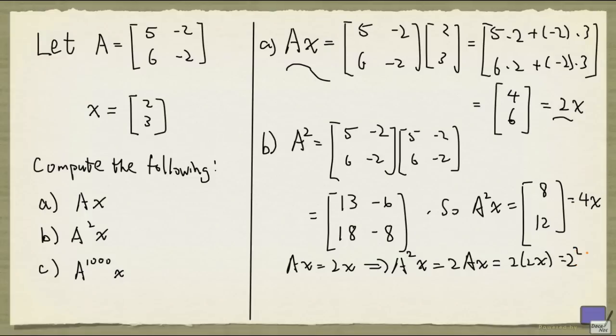And that's 2 squared x. Now we can repeat this and get that if k is a positive integer, then this is simply 2 to the k times x. So we can write down A to the 1000 times x to be 2 to the 1000 times 2, 3. And that will be a good enough answer for this question.